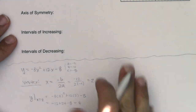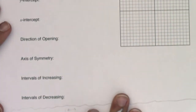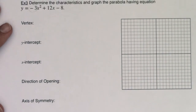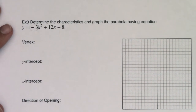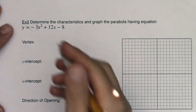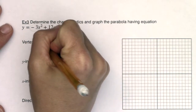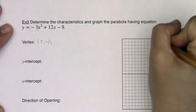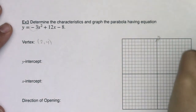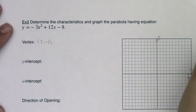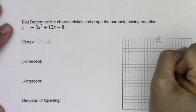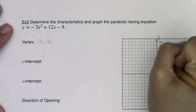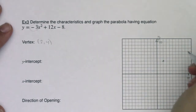The vertex is the ordered pair (2, 4). I'll go ahead and start labeling and scaling my axes and plot the vertex.